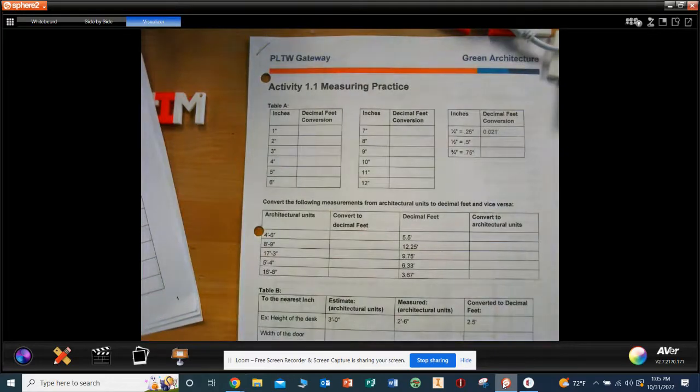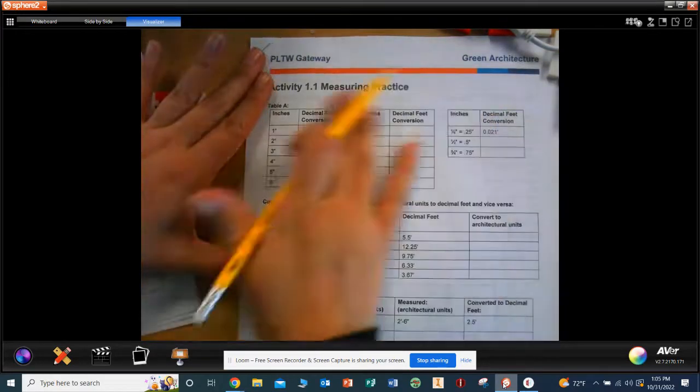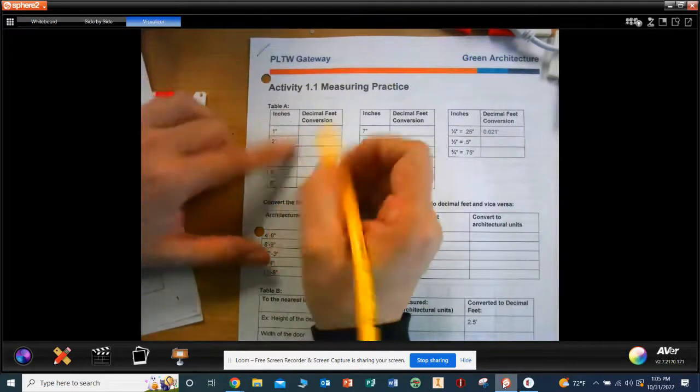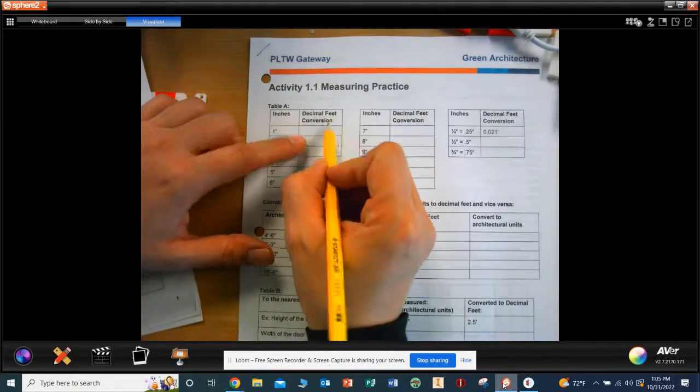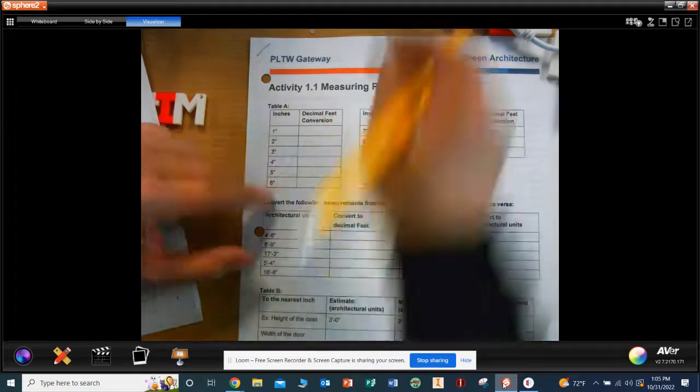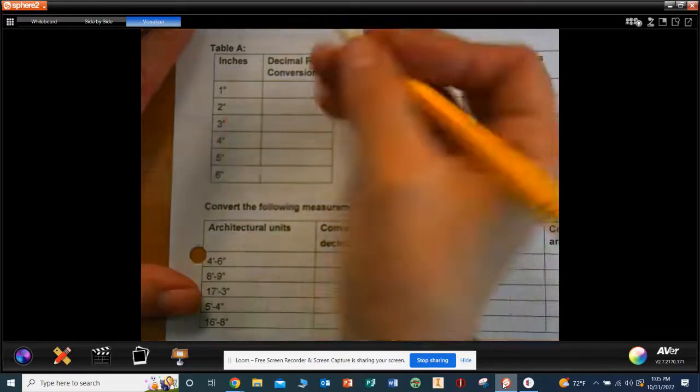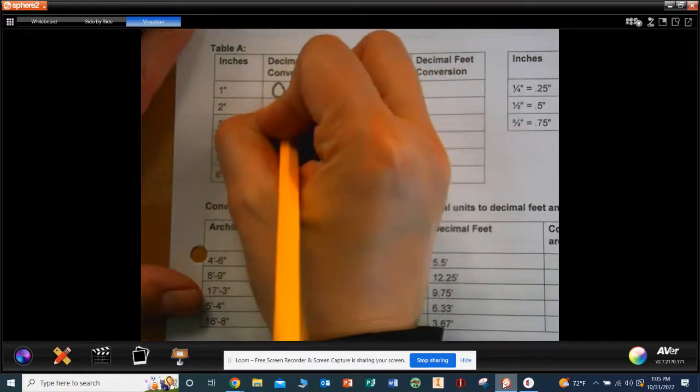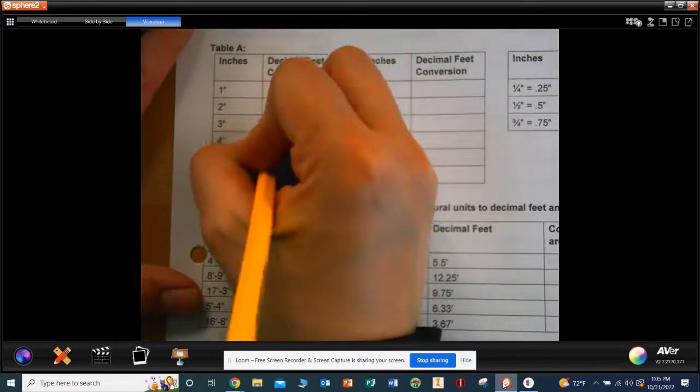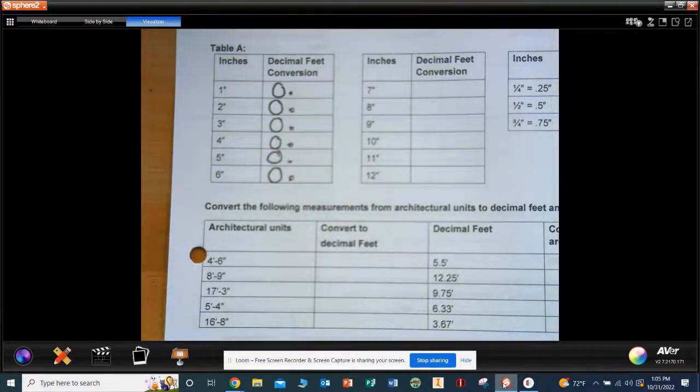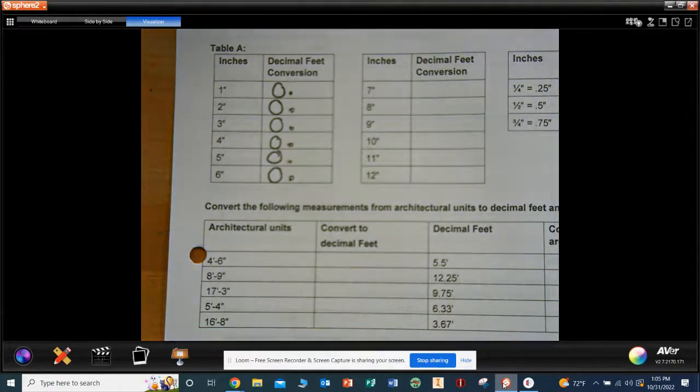All right, so first part is actually the most important part. Here are your inches. You're going to convert them to decimal feet. All of these are inches, so that means that the first number in front of the decimal will always be 0 point, 0 point, 0 point, because there's no feet. So that means all of these are going to be decimal. They're all going to be under one. They're all going to start with 0.something.